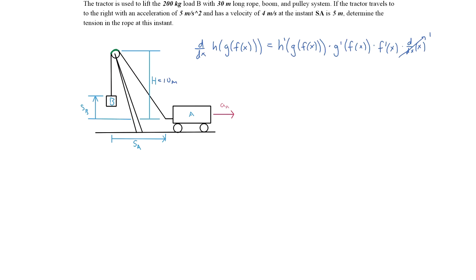The goal in this problem is to find the tension in the rope. To do that, we need to find the acceleration of body B so we can apply Newton's second law. The problem has already defined the positive directions of SA and SB, so we'll use those. Positive for SB is upward, and positive for SA is to the right.